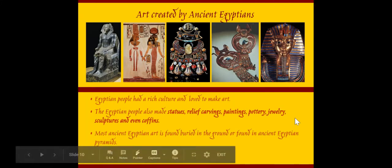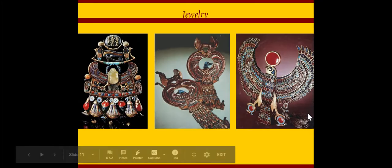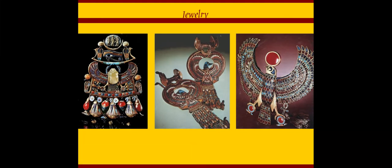Some of the different types of art created by ancient Egyptians — they made a lot of art. Egyptian people made statues, relief carvings, paintings, pottery, jewelry, sculptures, and coffins as well. Most of the ancient Egyptian art was found buried in the ground or found in ancient Egyptian pyramids, which were tombs. They would often leave lots of art, lots of jewelry, lots of things with the pharaohs when they buried them, because they thought they would need them in the afterlife. Here are some examples of jewelry.